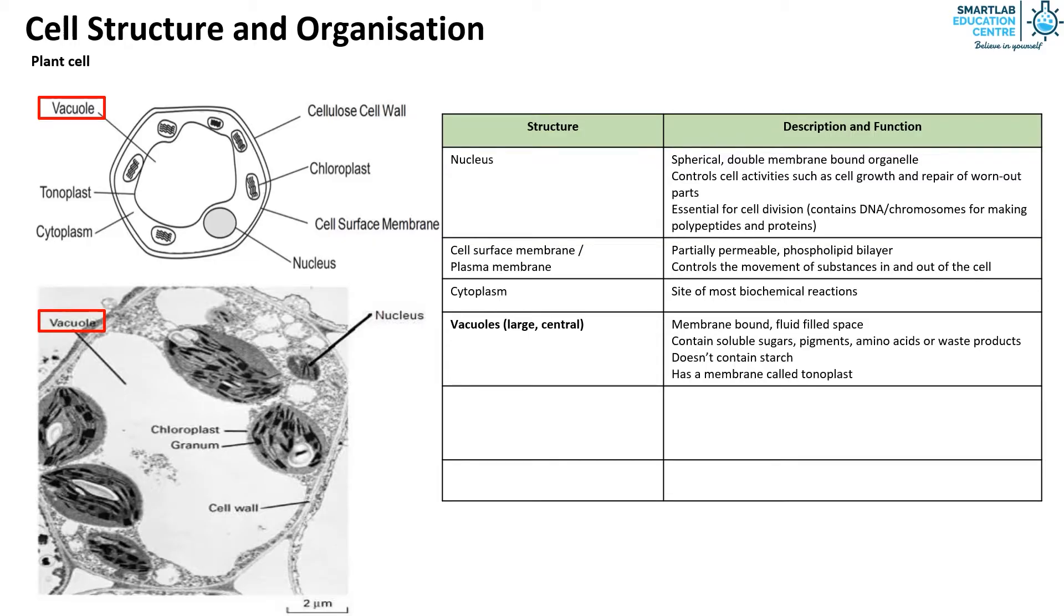Plant cells have cell wall which is made of cellulose and is fully permeable. It protects the cell, gives it a fixed shape and support which prevents the cell from bursting if it absorbs too much water.